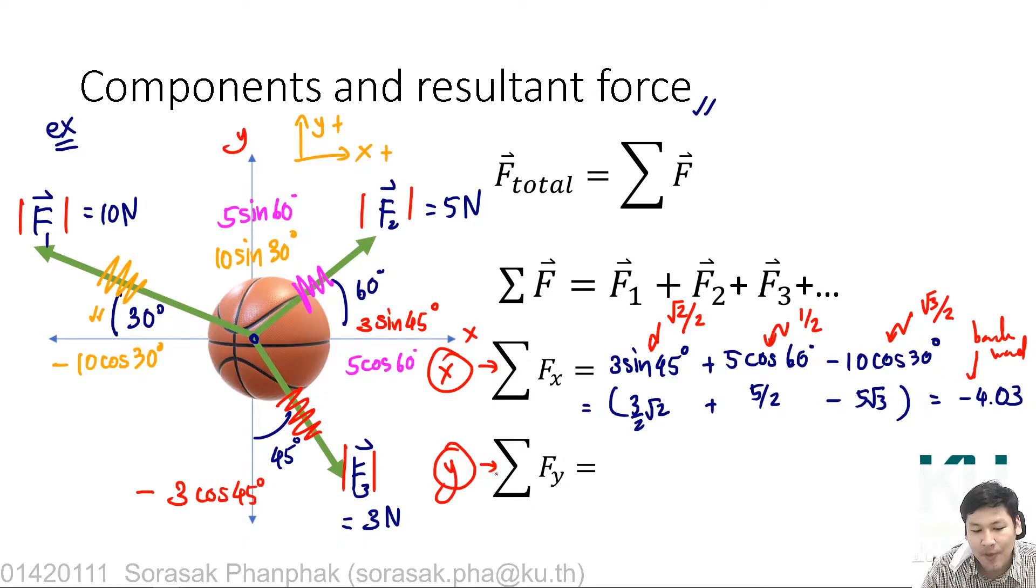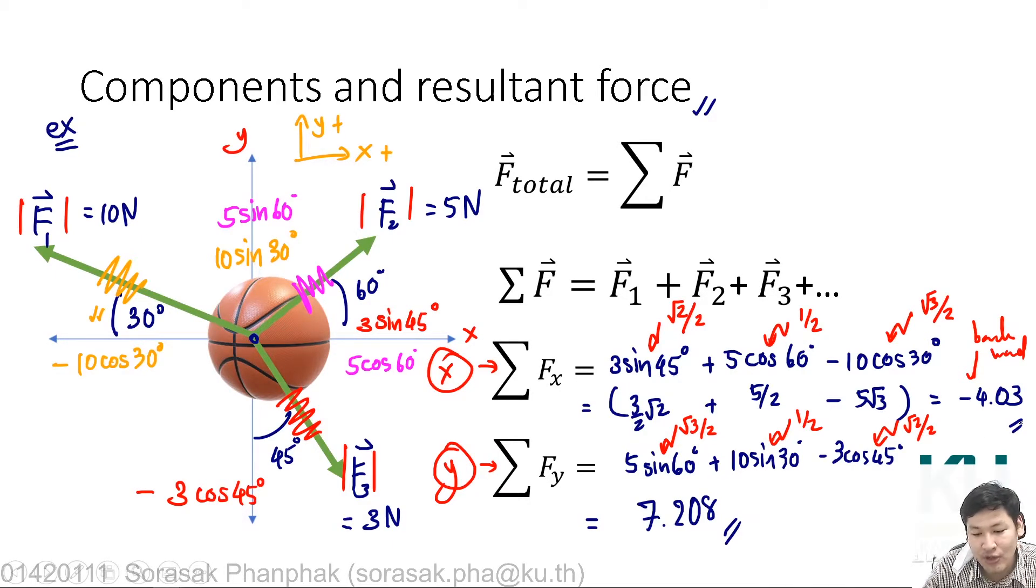How about the Y axis? You have 5 sin 60 plus 10 sin 30 minus 3 cos 45. Sin 60 is root 3 over 2, this is 1 over 2, and this is root 2 over 2. When you sub all in and write the final result, you get 7.208. Don't forget that force has the unit as Newton.